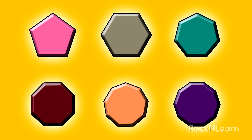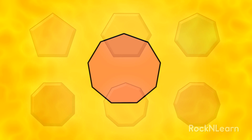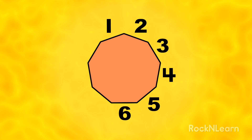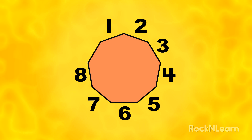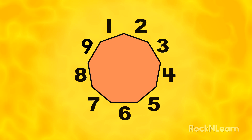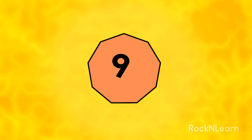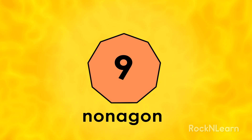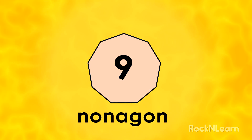Point to the peach shape. Let's count the sides. One, two, three, four, five, six, seven, eight, nine! A shape with nine sides is called a nonagon. A nonagon!